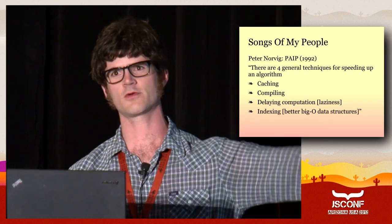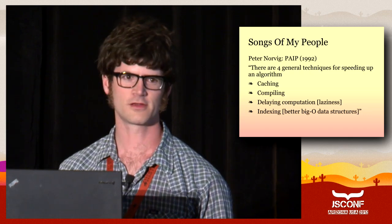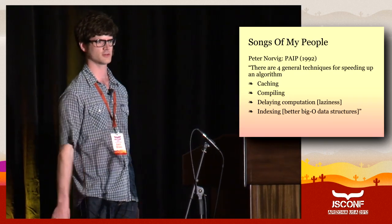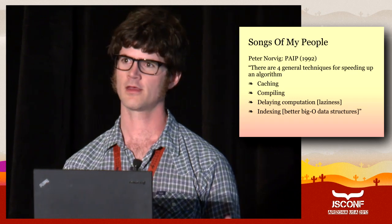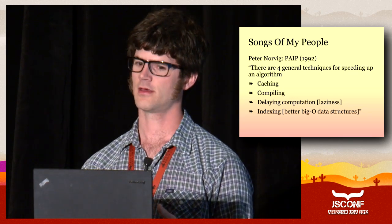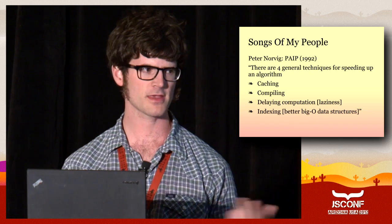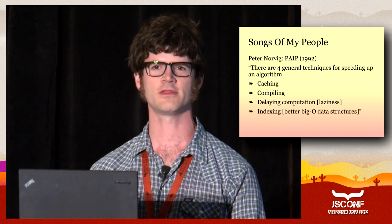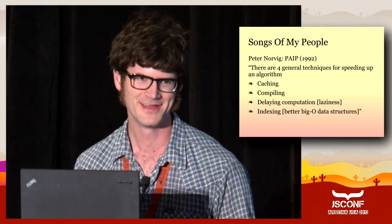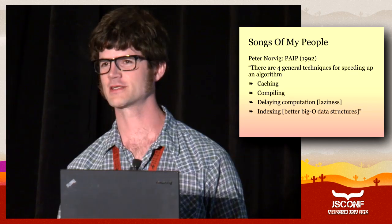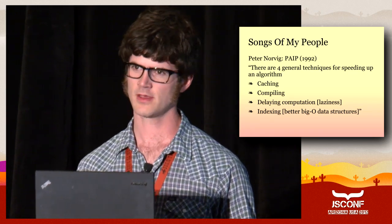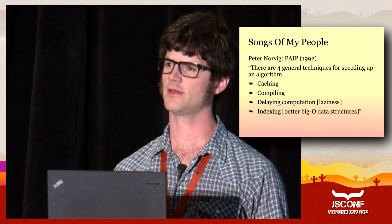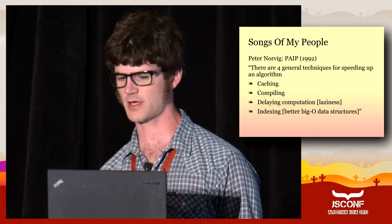One that has really stuck with me — even in C++ — is the statement that there are four general techniques to speed up an algorithm: caching, compiling, delaying computation (which we sometimes call laziness), and indexing. He threw in indexing because Lisp programmers liked to use linked lists for everything, and he was saying please use an array or some structure with better big-O complexity. I'm going to use this statement from my tribe as a way to interpret what I've found in the JavaScript tribe.